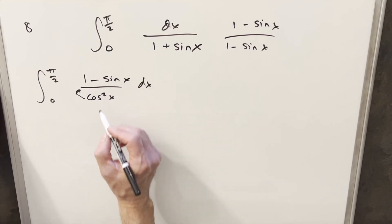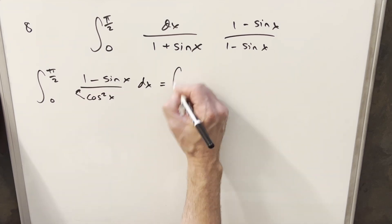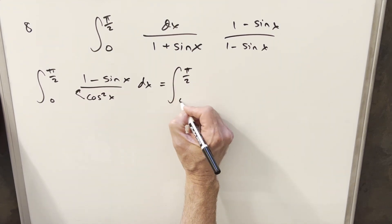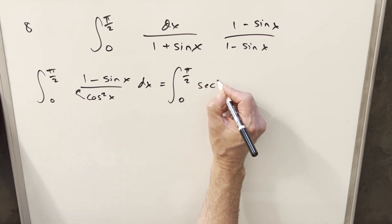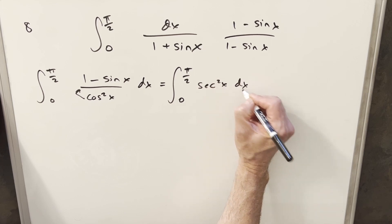And then what I want to do from here is I just want to divide this cosine squared x into each term. So that's going to give me, for the first one, 1 over cosine squared x is going to be just secant squared x. That's pretty nice.